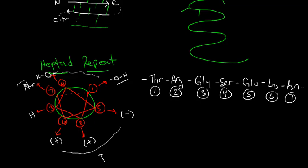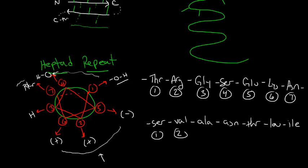Now let's think about a different polypeptide chain: serine, valine, alanine, asparagine, threonine, leucine, and isoleucine. Just as before, these map to positions one through seven.